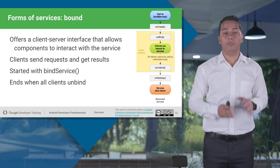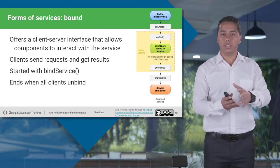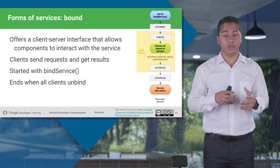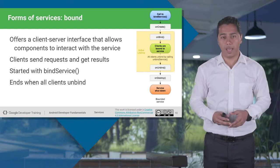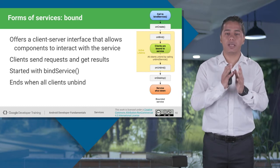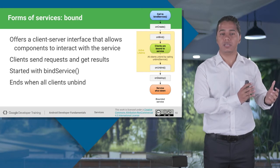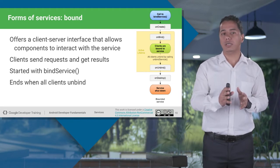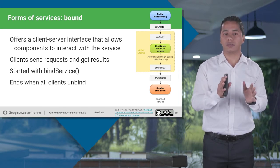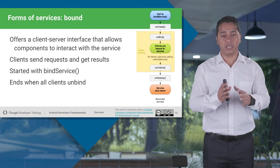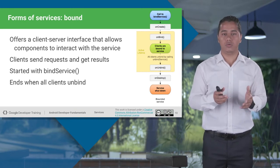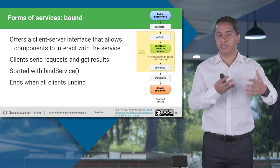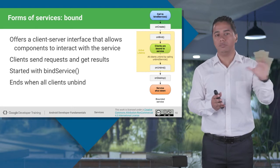The next form of service is bound services. Bound services provide a client-server interface, implemented as server-side, which allows components to interact with the service. Your client can send requests to the service and get the result back. You can start a bound service by calling bindService. Unlike started services which are called by startService, bound services are called by bindService. Your bound service will not get destroyed until all clients have unbound from it. For example, if there are 10 clients using a bound service and one client unbinds, the service is not destroyed — only when all clients unbind does the bound service get destroyed.